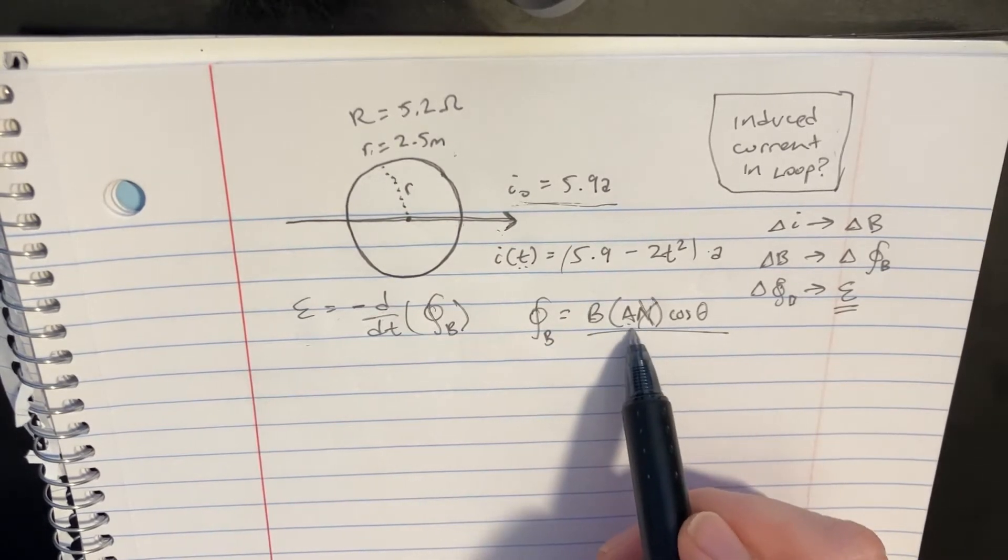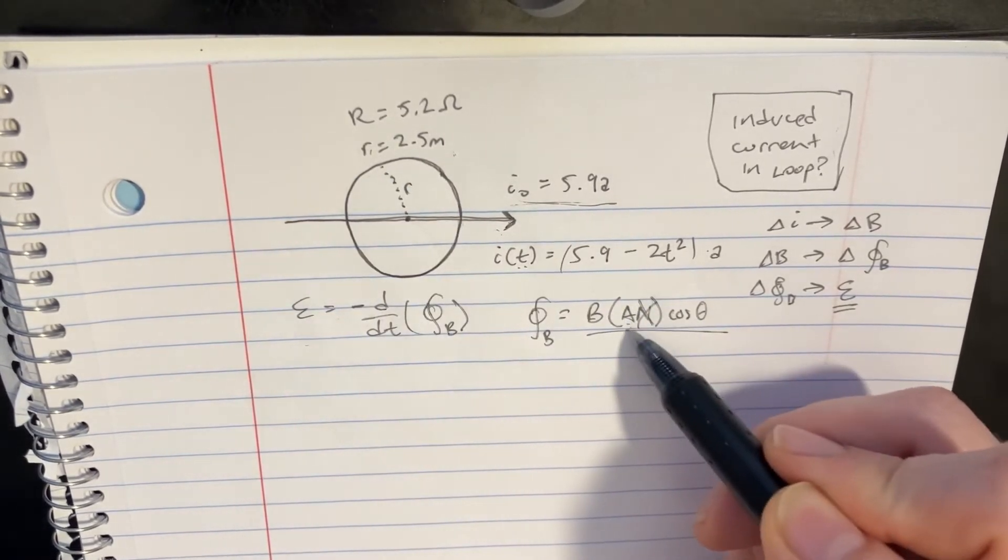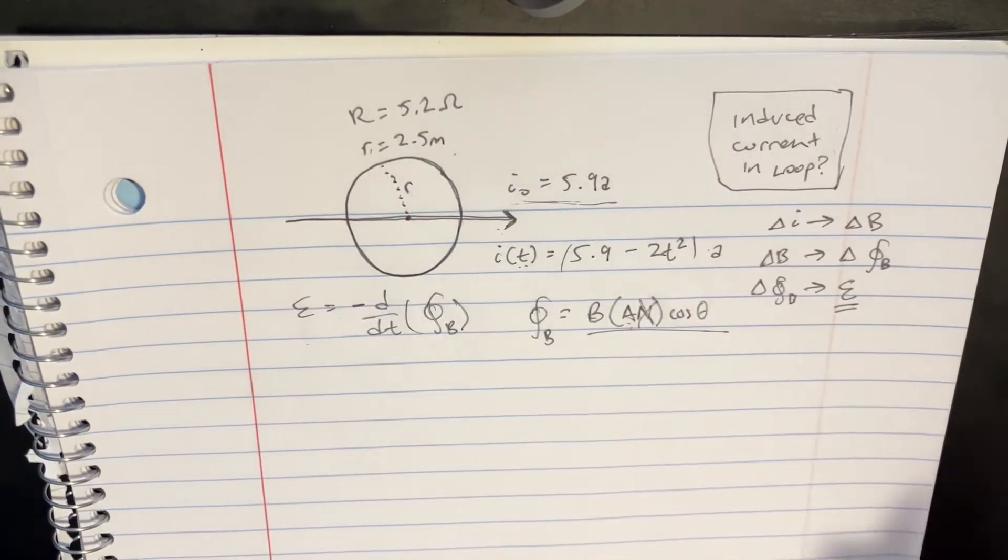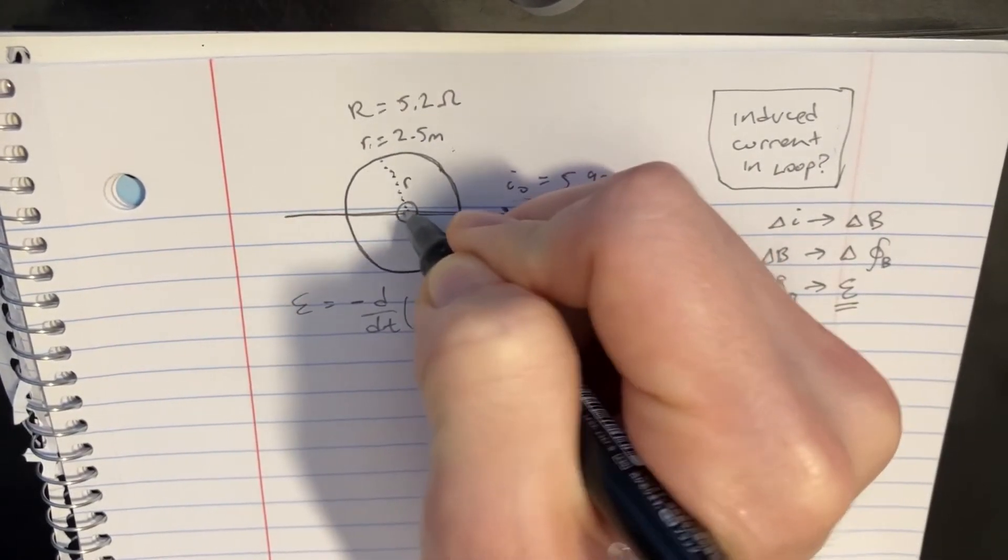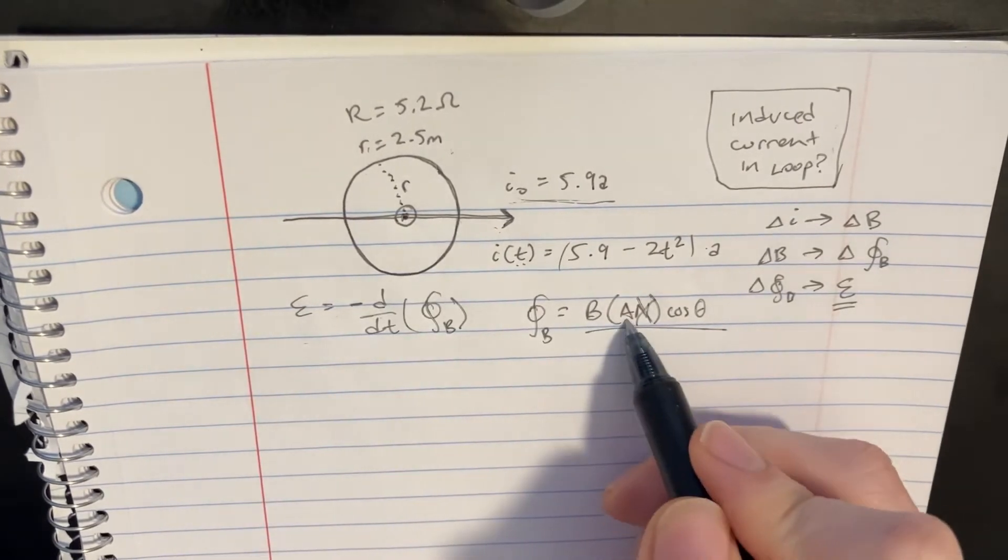And we also have the area, which is going to be like this, but that would be the normal of the area. So that will be coming out of the page. I can make it kind of like this. That'll be the normal of that area.